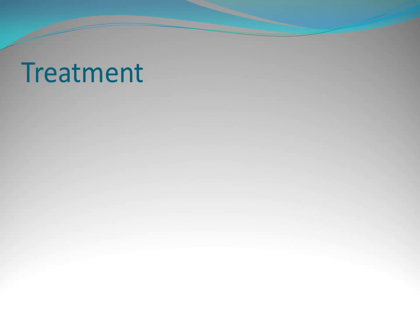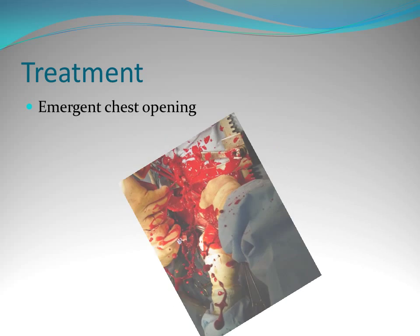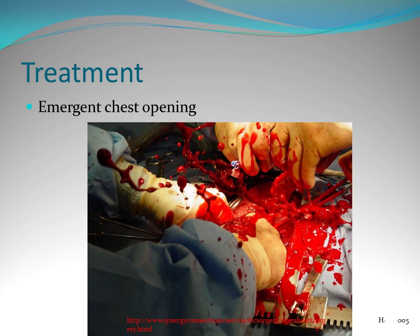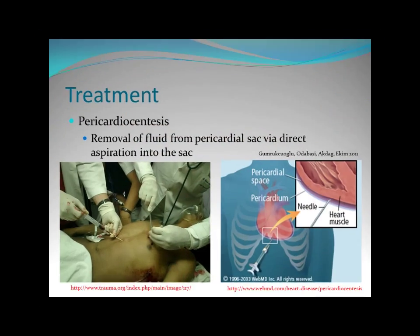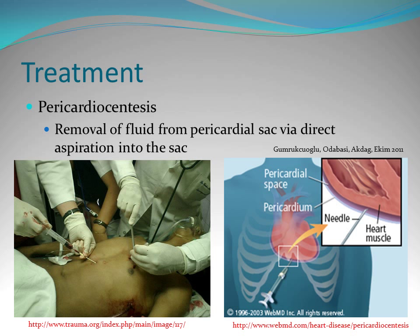Treatment in the ICU with a post-cardiac surgical patient — if they tamponade, we're probably going to emergently open their chest. However, if they don't already have a sternotomy, pericardiocentesis is the first-line intervention for removing fluid from the sac to release the tamponade.